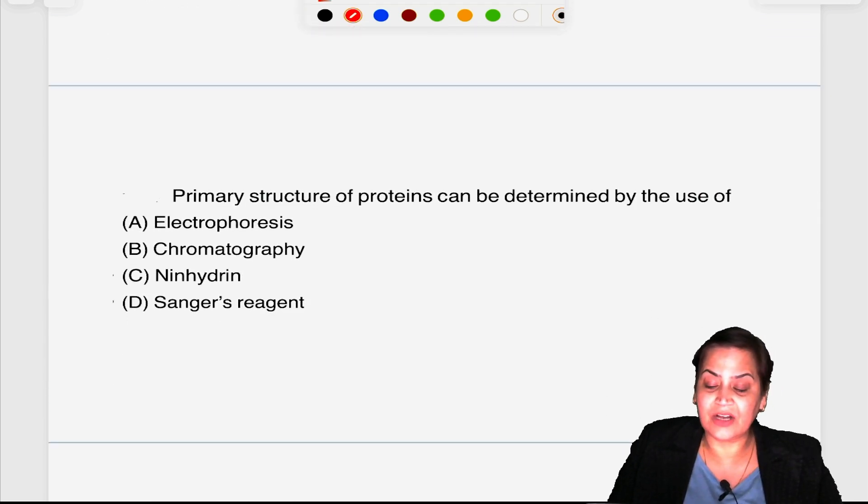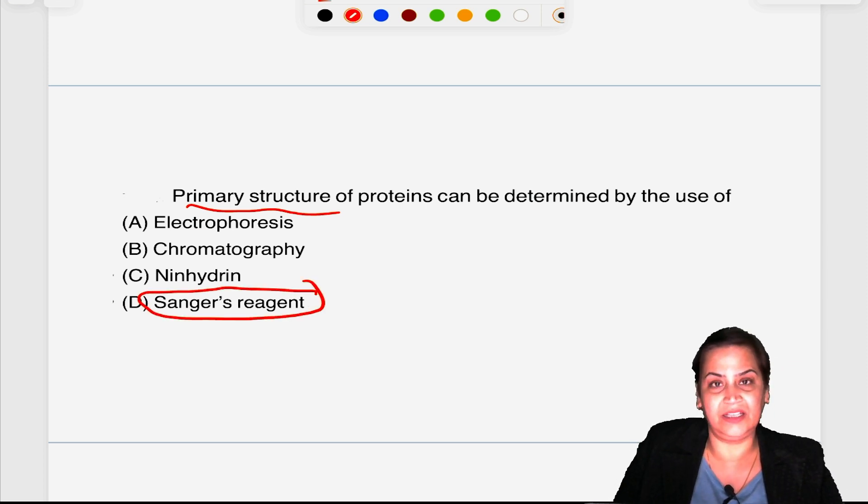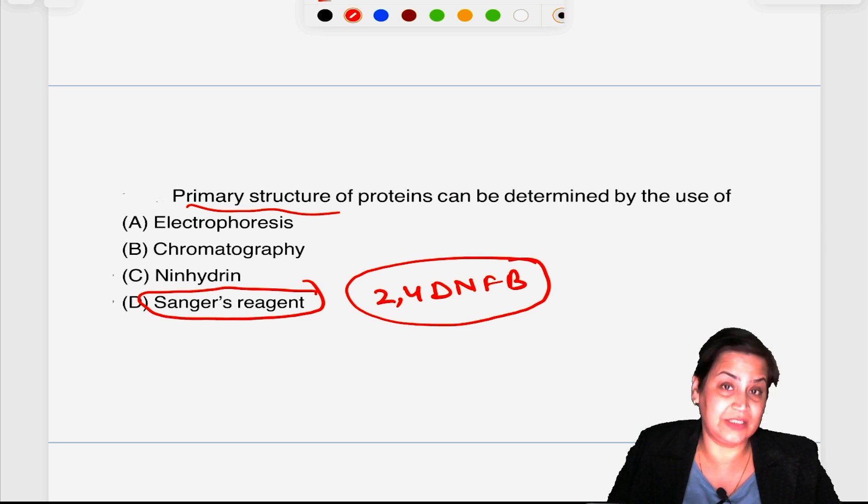Primary structure of proteins can be determined by the use of? Always remember primary structure means N-terminal residue analysis, and for this we always use Sanger's reagent which is 2,4-dinitrofluorobenzene. This is required for N-terminal residue analysis and another is Edman degradation with PITC, phenylisothiocyanate.